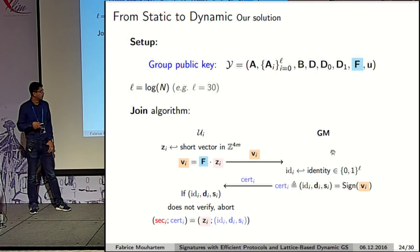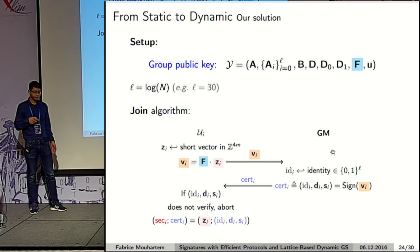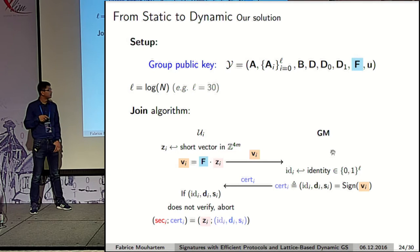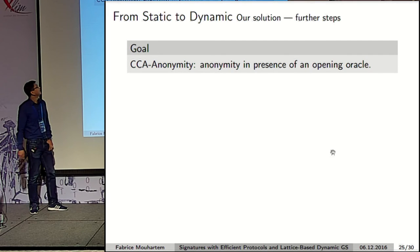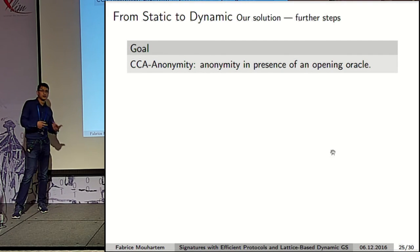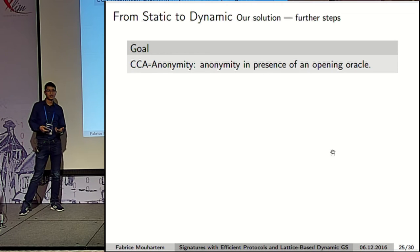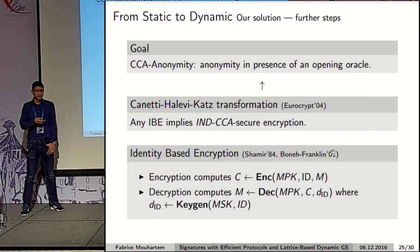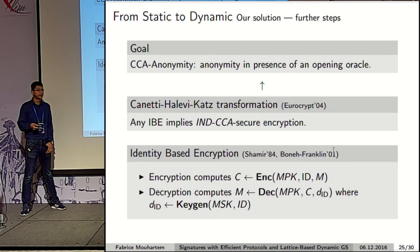We can notice that the join algorithm consists of only two messages — one in each direction — making it round-optimal. Also, there is no proof of knowledge required here, which enables concurrent joins. For signing, we want full anonymity, meaning anonymity even in the presence of an opening oracle. To achieve this, we use a CCA-secure public-key encryption scheme, constructed via the Naor-Yung transformation applied to an IBE — specifically the Gentry-Peikert-Vaikuntanathan IBE.